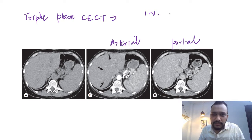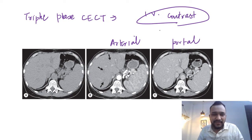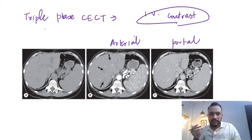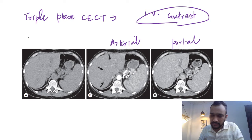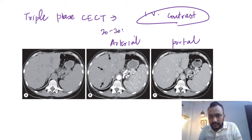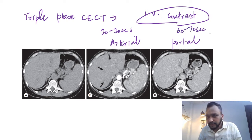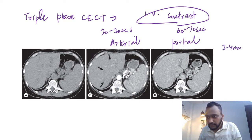We give IV contrast to the patient and acquire the scan in various phases. The arterial phase is acquired at 20 to 30 seconds, portal venous phase is acquired between 60 to 70 seconds, and the delayed phase is acquired between three to four minutes.